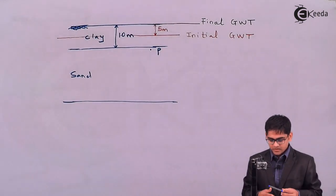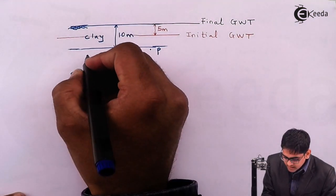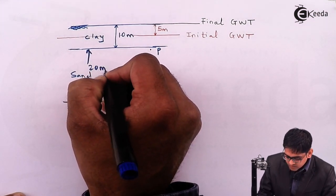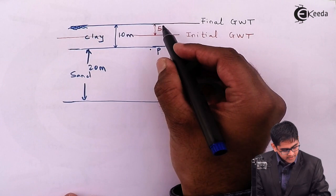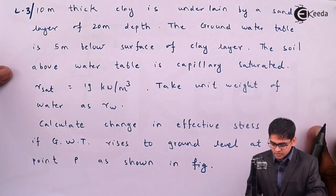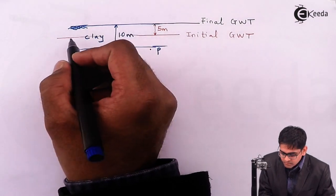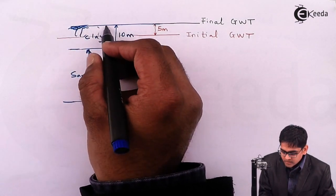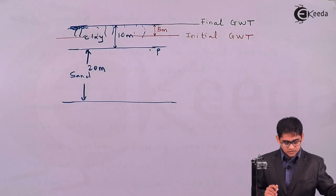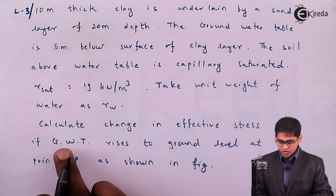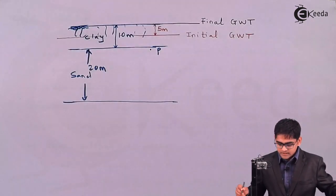In the figure, we have clay which is 10 meters thick, underlain by a sand layer which is 20 meters thick. The groundwater table is 5 meters below the surface of the clay layer — this is the initial groundwater table. The soil above the groundwater table is completely saturated by capillary forces in the initial stage. We need to evaluate the change in effective stress once the groundwater table rises to ground level, calculated at point P, which is located in the sand layer.